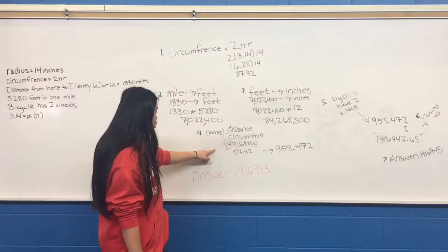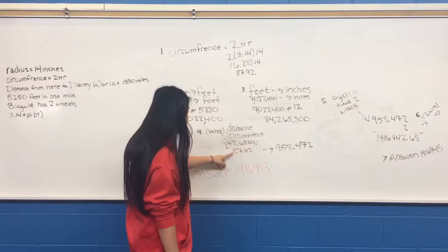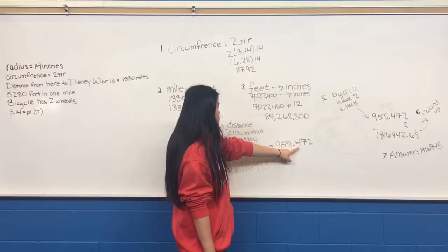After that, you divide the distance by the circumference. You get 84,268,800 divided by 87.92 equals 958,472.